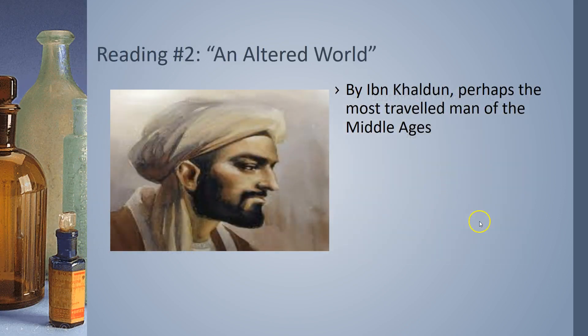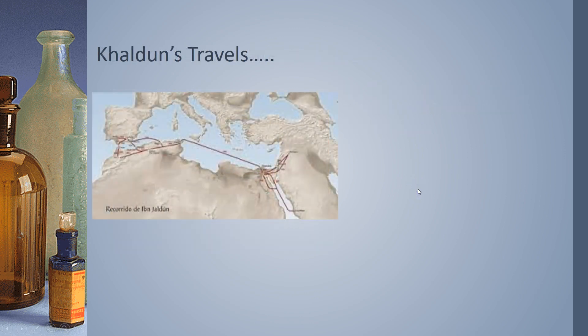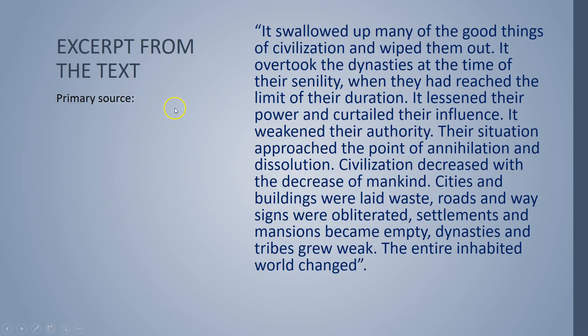The second reading was called An Altered World by Ibn Khaldun, one of the most traveled men of the Middle Ages. He traveled all throughout the Mediterranean, southern Spain, northern Africa, Egypt, and the Middle East into modern-day Saudi Arabia. As he traveled, he wrote, and from the text it reads, in referring to the plague: it swallowed up many of the good things of civilization and wiped them out. It overtook the dynasties at the time of their senility. When they had reached the limit of their duration, it lessened their power, curtailed their influence, and weakened their authority.